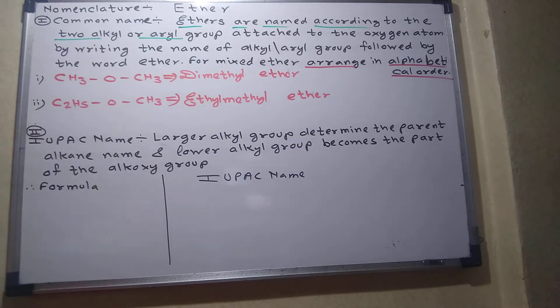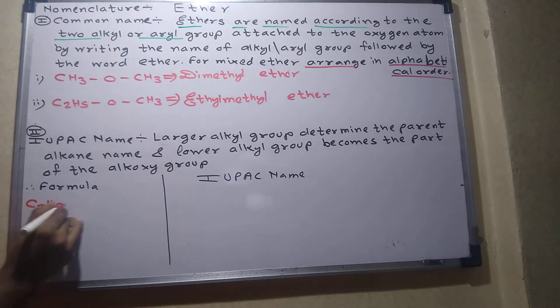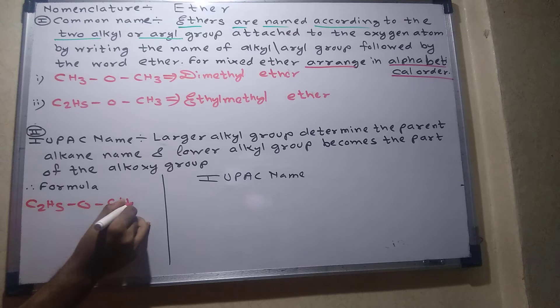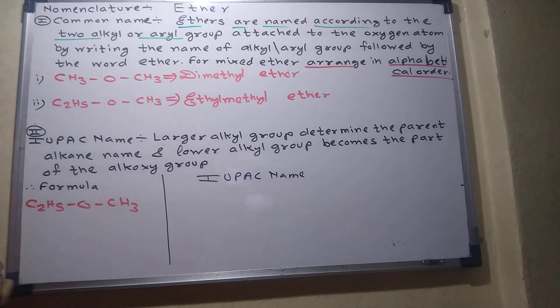Now we will do the next naming system, that is what? IUPAC name. Let me write down the formula: C2H5-O-CH3. Then I will say C3H7-O-C2H5. Then we will have an example. How do we pronounce this?